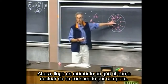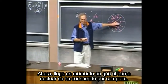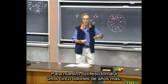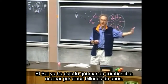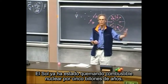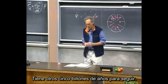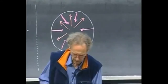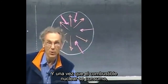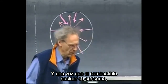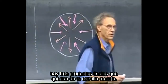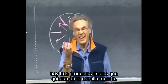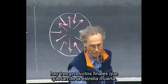There comes a time when the nuclear furnace has been completely consumed. For our sun, that takes an additional five billion years. The sun has already been burning nuclear fuel for five billion years and has another five billion to go. Once the nuclear fuel has been consumed, there are three end products of the dead star that is left over.